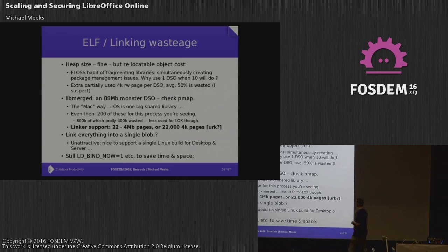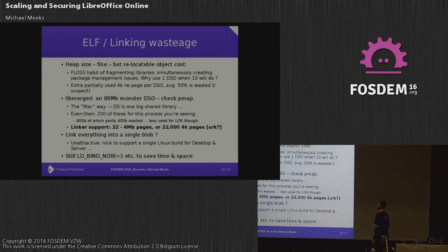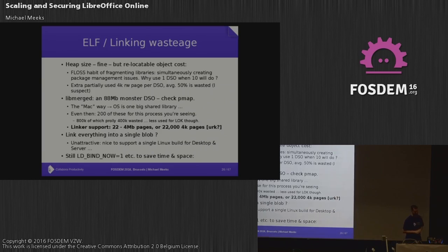A better way to waste memory is with ELF linking. The FLOSS ecosystem has the habit of creating hundreds of libraries. Each of these libraries unfortunately wastes memory — you need all this global state. We can get rid of some of it by using LD_BIND_NOW. The symbol pieces we can share across all these processes, but the global data we have to initialize and it won't work nicely. LibreOffice is currently using something like 211 shared libraries, and while it's only about 800K, it's still worth eliminating.